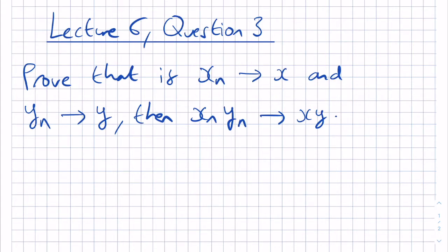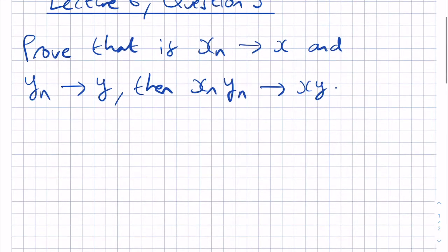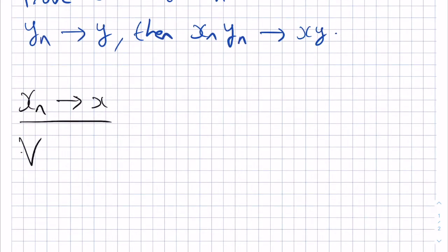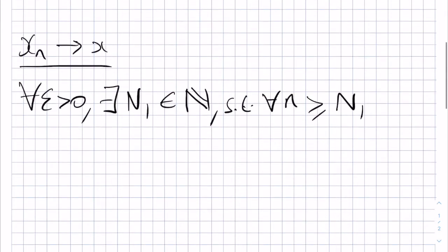So first, let's unpick what assumptions we can use, namely that Xn converges to X and Yn converges to Y. If Xn converges to X, then this tells us that for all epsilon greater than 0, there exists a number n1, which is a natural number, such that for all small n greater than or equal to that n1, we have that the modulus of Xn minus X is strictly less than epsilon.